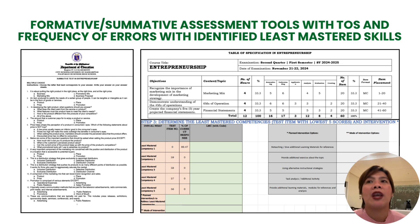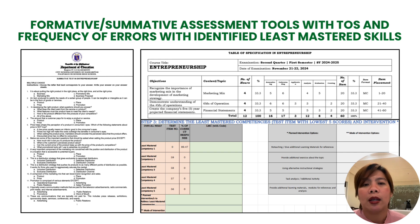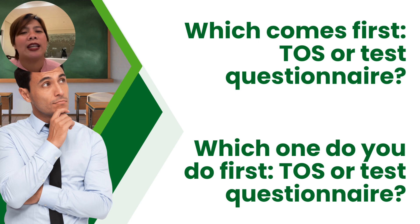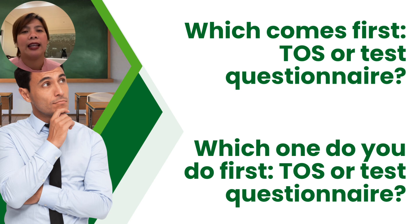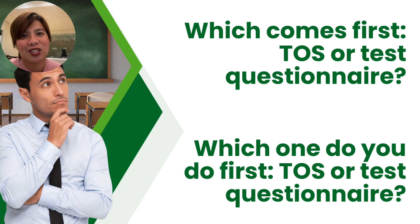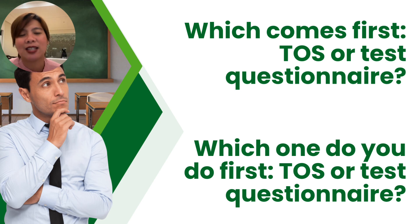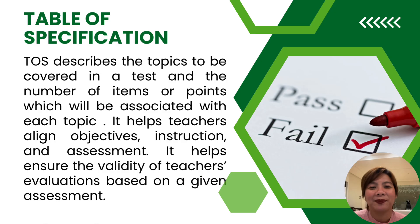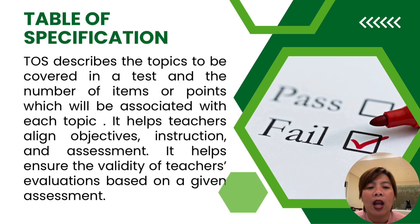We can also monitor learners' progress with the use of summative assessment tools showing the frequency of errors and the identified least mastered skills. Every quarterly exam, we are asked to submit our test paper with a Table of Specification (TOS). An important question: which comes first — the TOS or the test questionnaire? A gentle reminder: the TOS should be accomplished first before the test questionnaire.